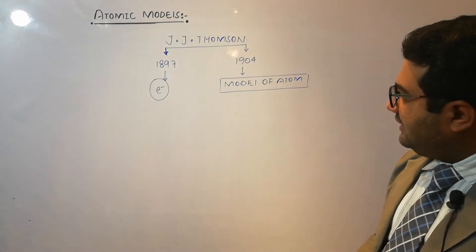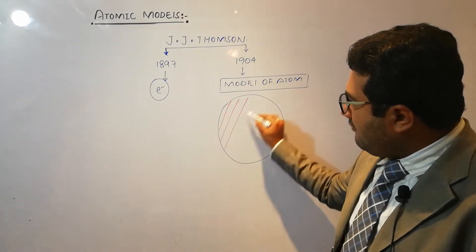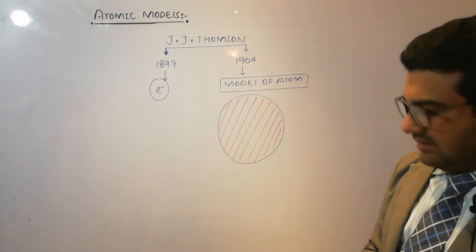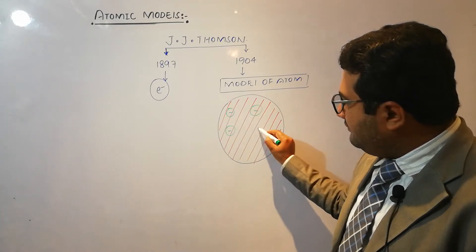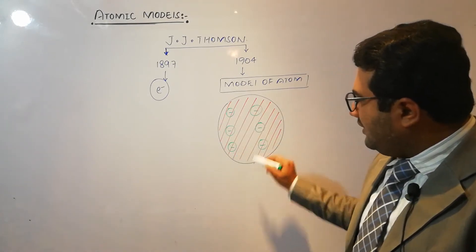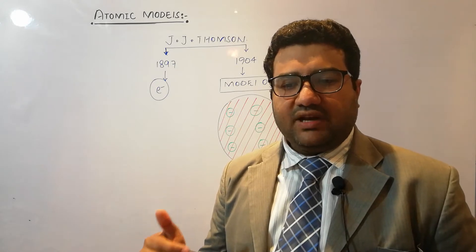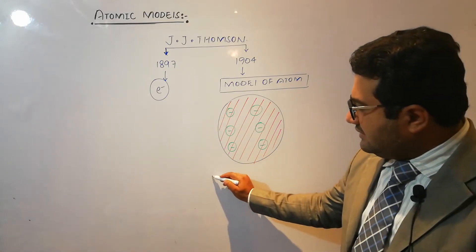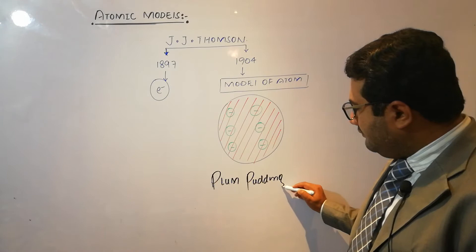According to J.J. Thompson's model, there is an area in the atom which is positively charged. The electrons in this positive area are distributed just like the plums in a Christmas pudding. Because of this resemblance, he named it the plum pudding model.